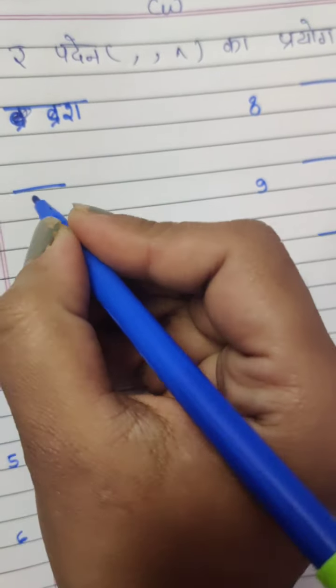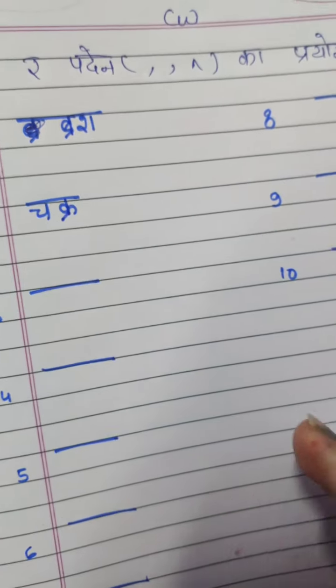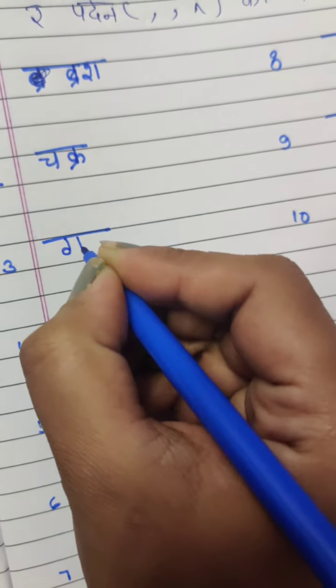And the next is Ch. And the third one is G, then Padeen ki matra and Ha. This is Grah.